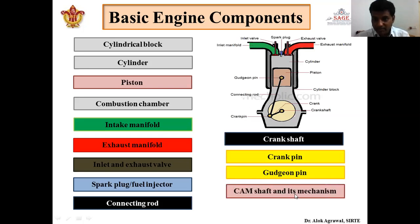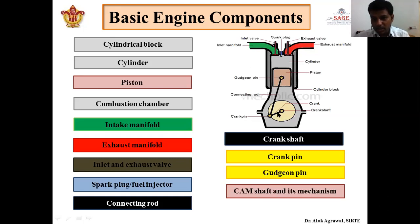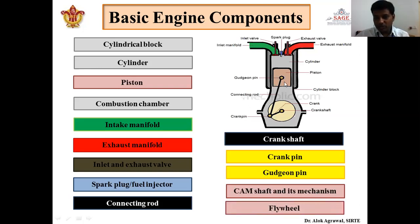Next is the camshaft and its mechanism. The camshaft mechanism is very important and is not shown in this figure as it is located above the valve. There is a cam arrangement over both the valves which decides when the inlet valve will open and close and when the exhaust valve will open and close, governed by the rotation of the crankshaft. Finally, the flywheel — its function is to store energy and deliver it when required. When the engine is under some transient condition, energy is taken from the flywheel; otherwise a part of the energy produced by the engine gets stored in the flywheel.